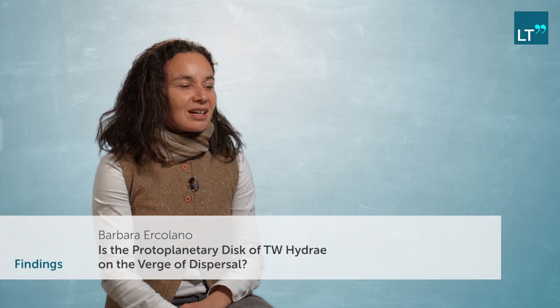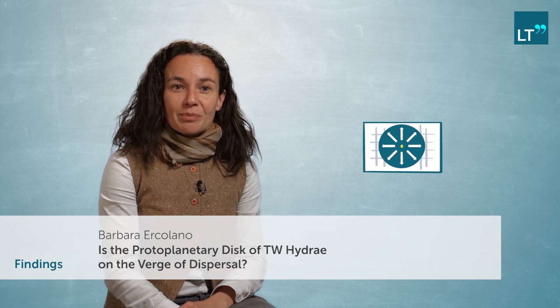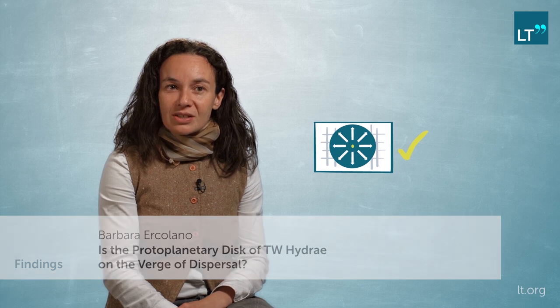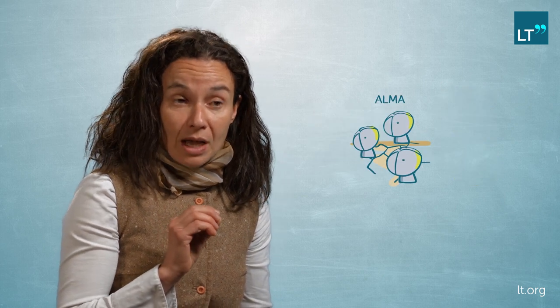We find that our model of photo-evaporation, driven by x-rays from the central star, could reproduce all the current observational constraints that we have on TW Hydra. In particular, we could reproduce the size of the hole for the age of TW Hydra, the rate of infall of material still onto the central star, which also tells us that this hole is not empty. In fact, one additional observation from ALMA was that right at the centre of this hole, there is some unresolved millimeter emission.